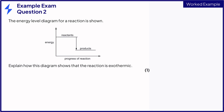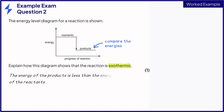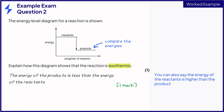This question shows you a simplified energy level diagram and asks you to explain how the diagram shows that the reaction is exothermic. To do this we must compare the energy of the reactants and the products. As we can see, the energy of the products is lower than that of the reactants, and this explains why it is exothermic — because in an exothermic reaction energy is given out to the surroundings, so the products will have less energy than what you started with. This answer will score you one mark. You could also have said that the energy of the reactants is higher than the products.